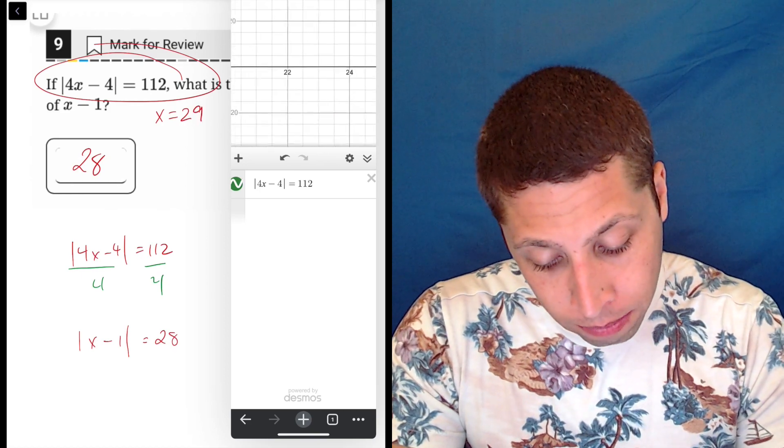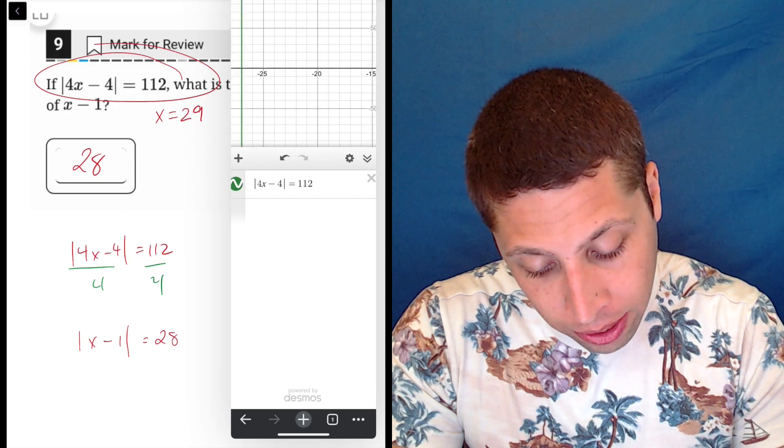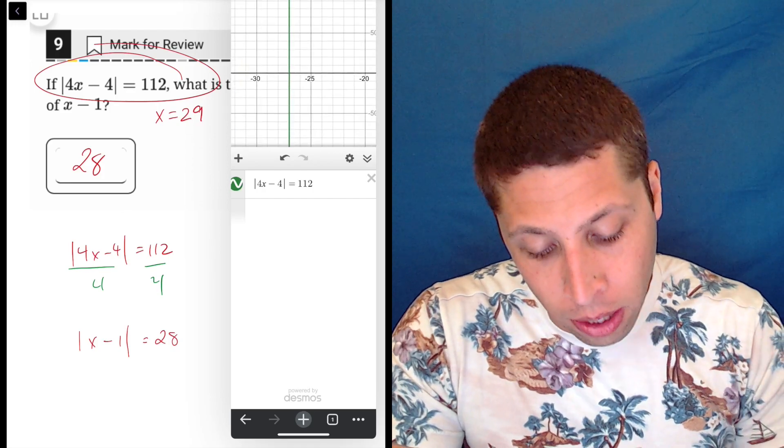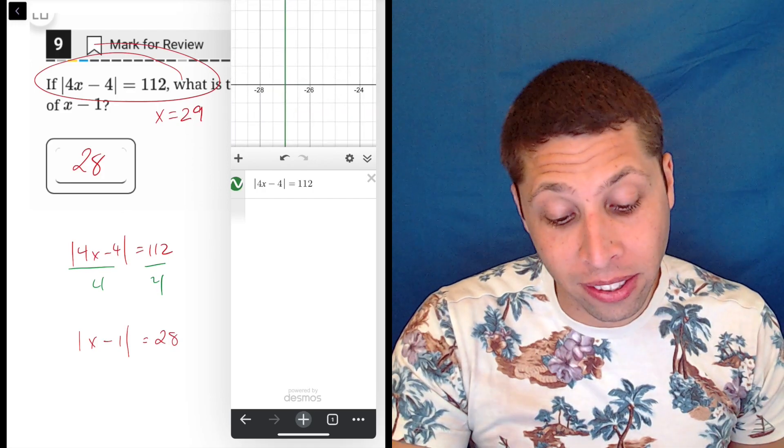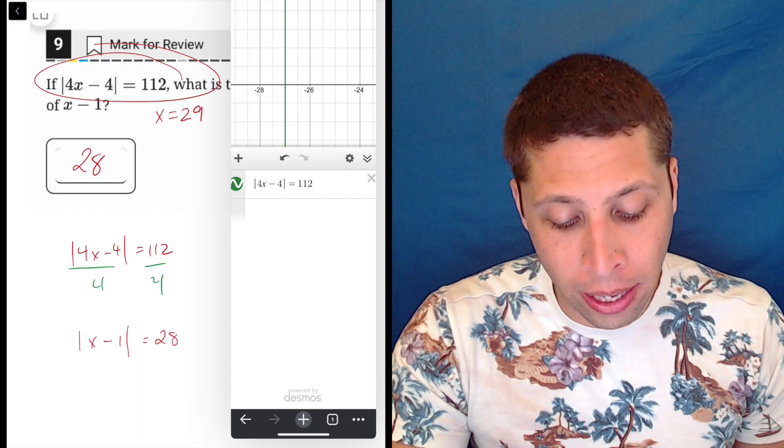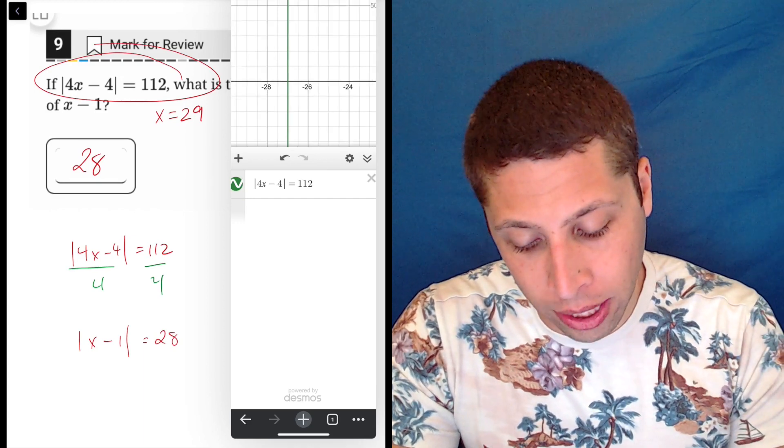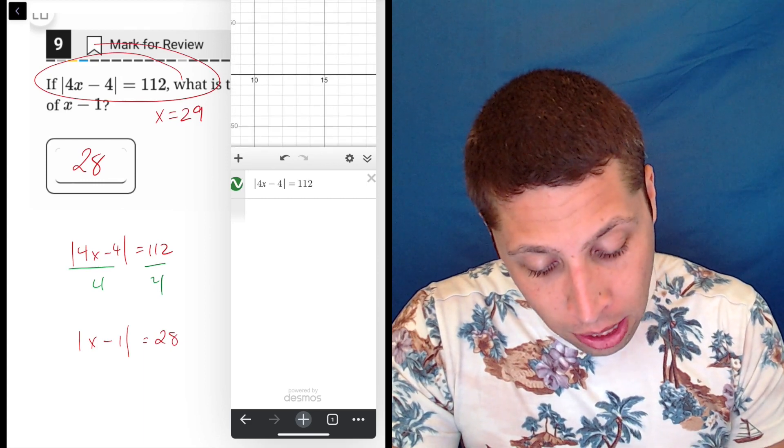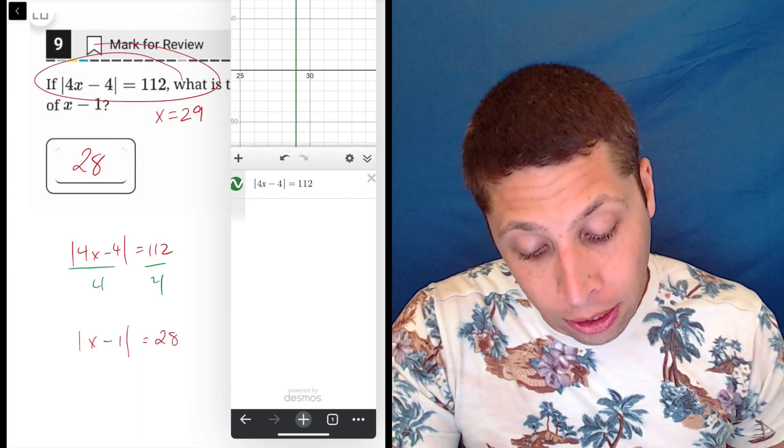And if we go over here on the other side, we'll see that it's also equal to negative 27, which makes sense because of the way that absolute values work. But we don't care about that because we're not interested in the negative side of things. So we're just interested in this 29 here.